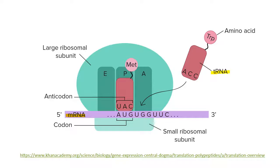The 70S ribosome is made of two parts: the 30S ribosome, which is the small subunit, and the 50S ribosome, which is the large subunit.